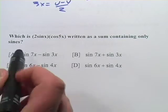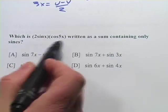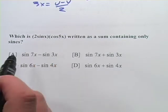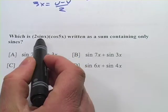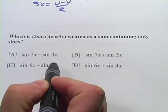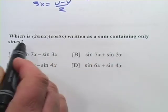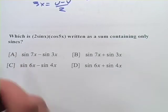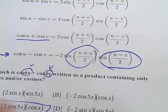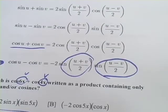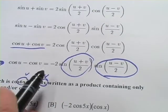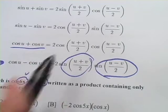All right. Let's look at one more. This one is going in the same direction. We have the product. We're going to try to find the sum. And we have a product that is 2 sine x times cosine 5x. And we want a sum containing only sine. So let's look back at our formula here. A sum containing only sine is going to be this one or this one. And we have the sine and the cosine. So it really could be either of these.